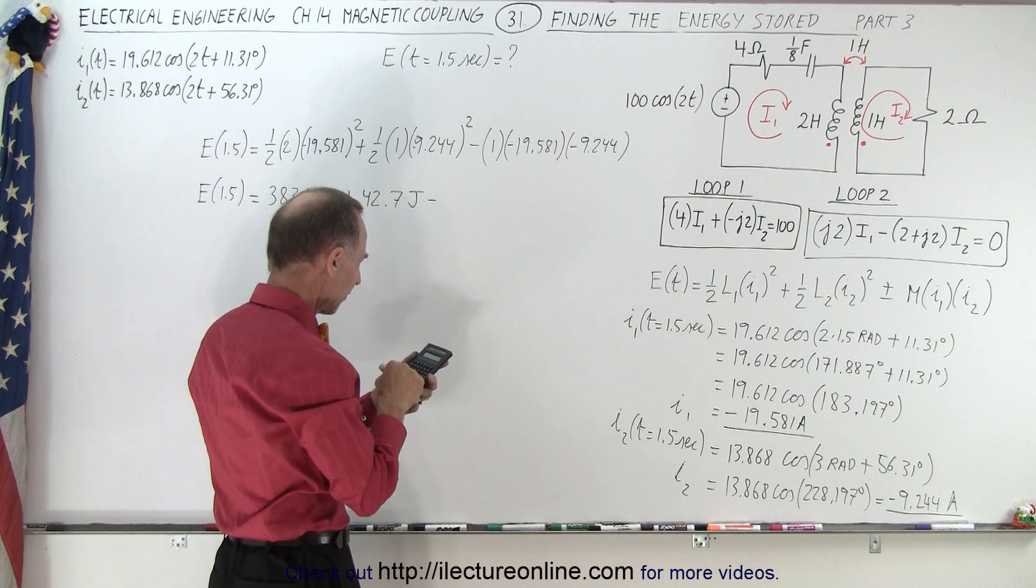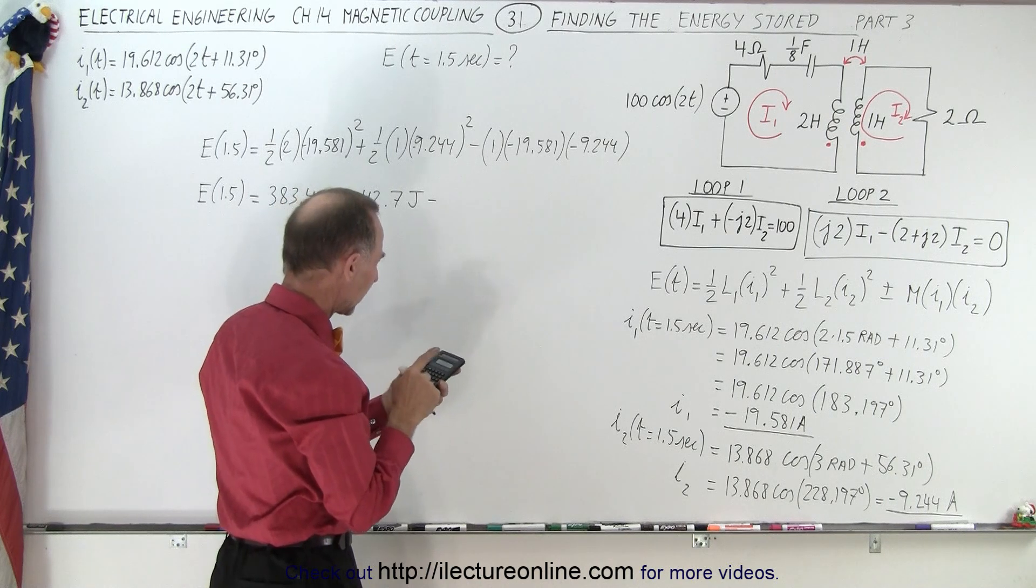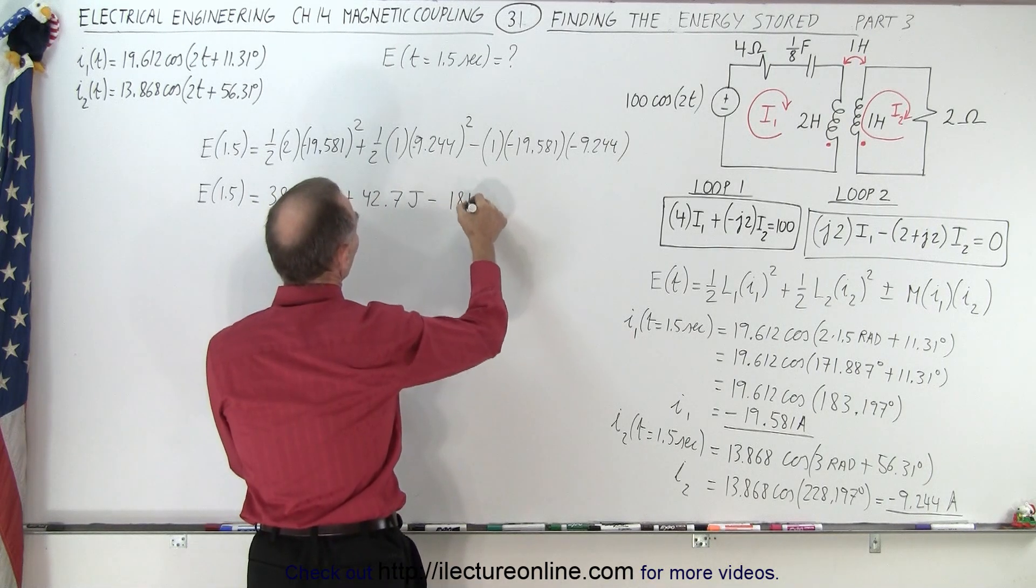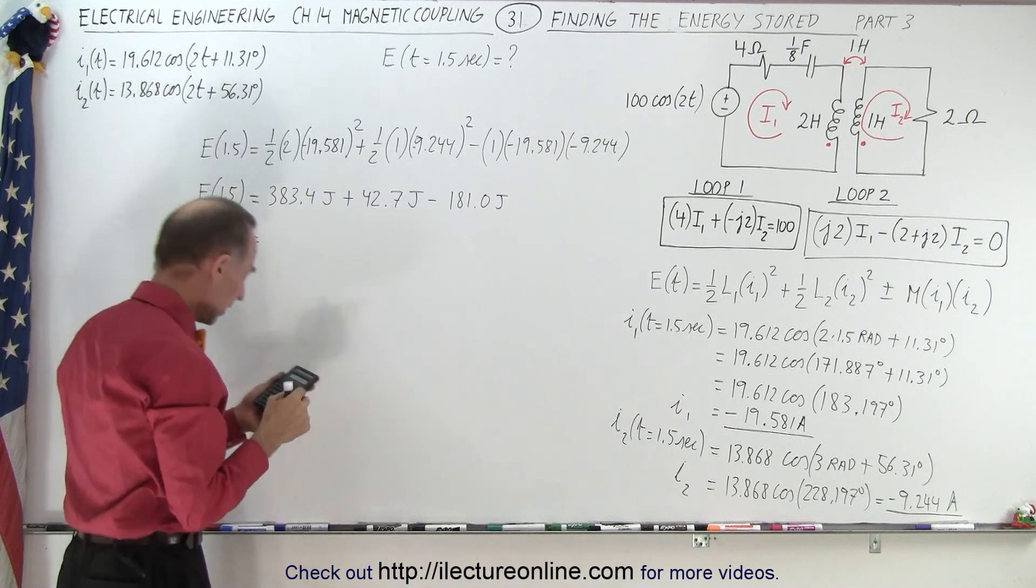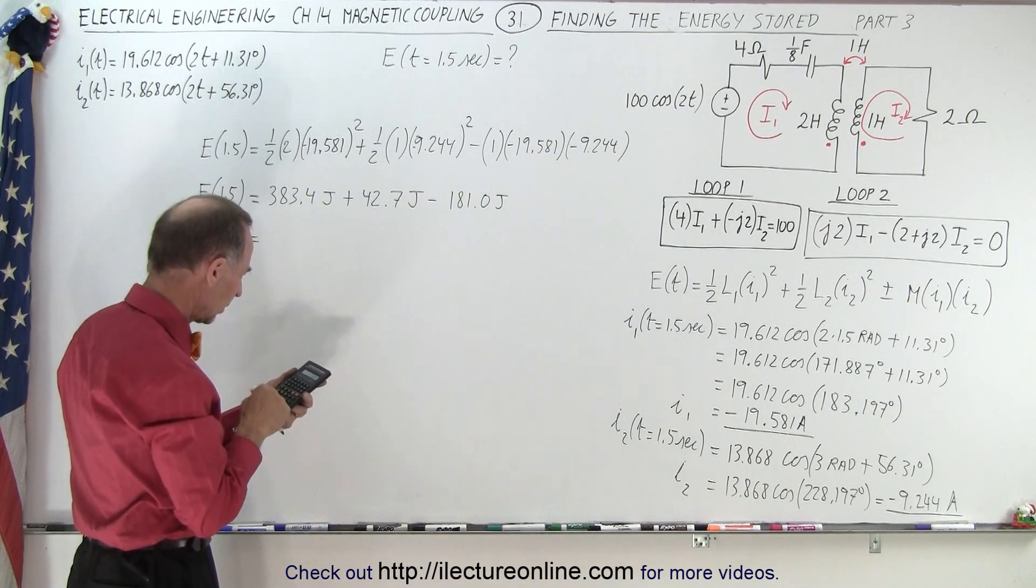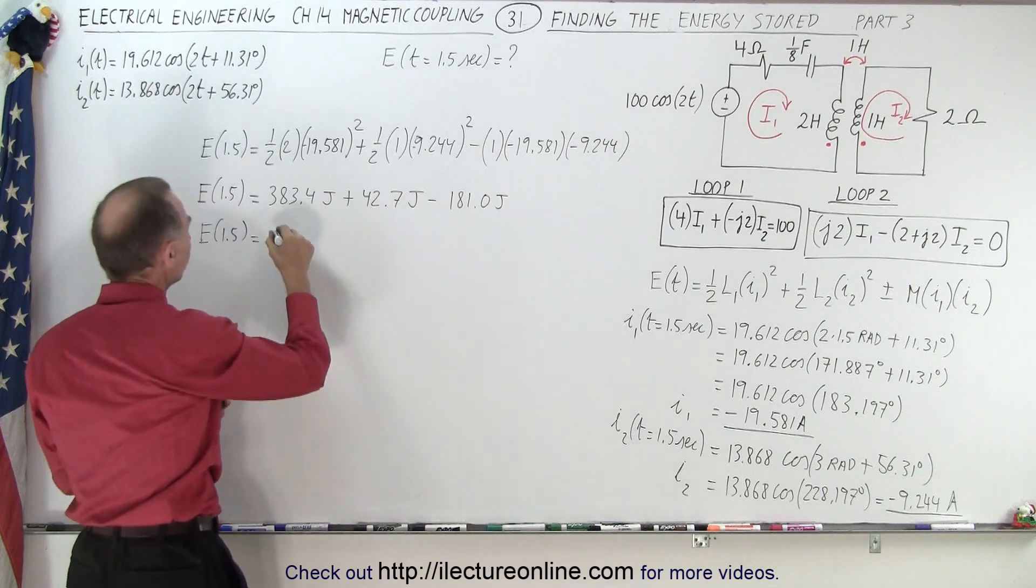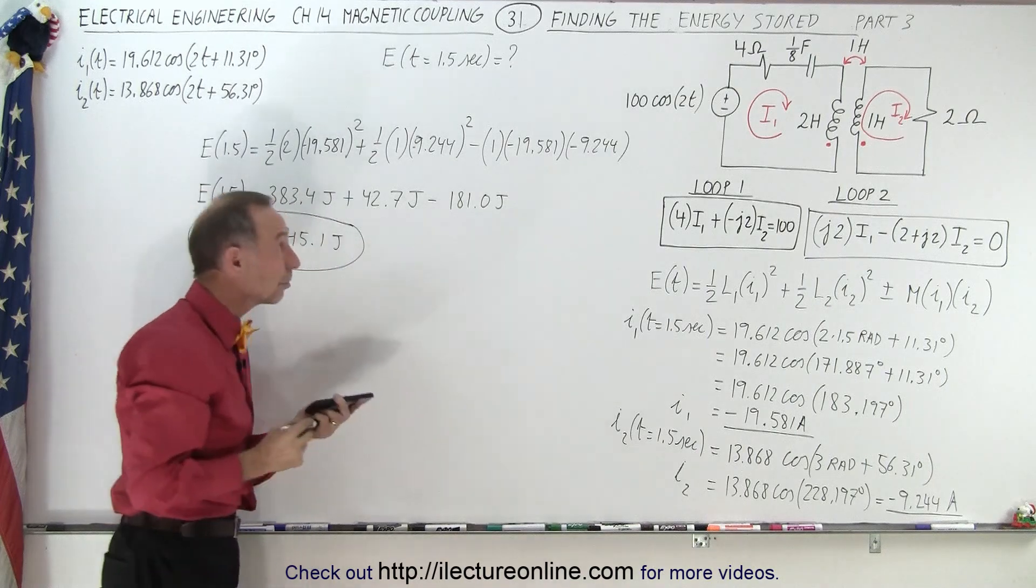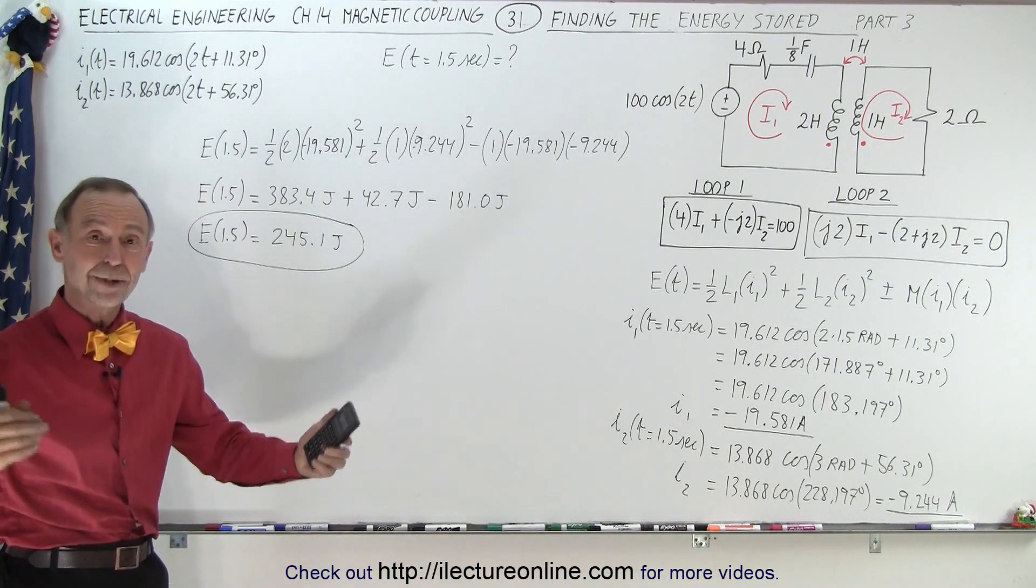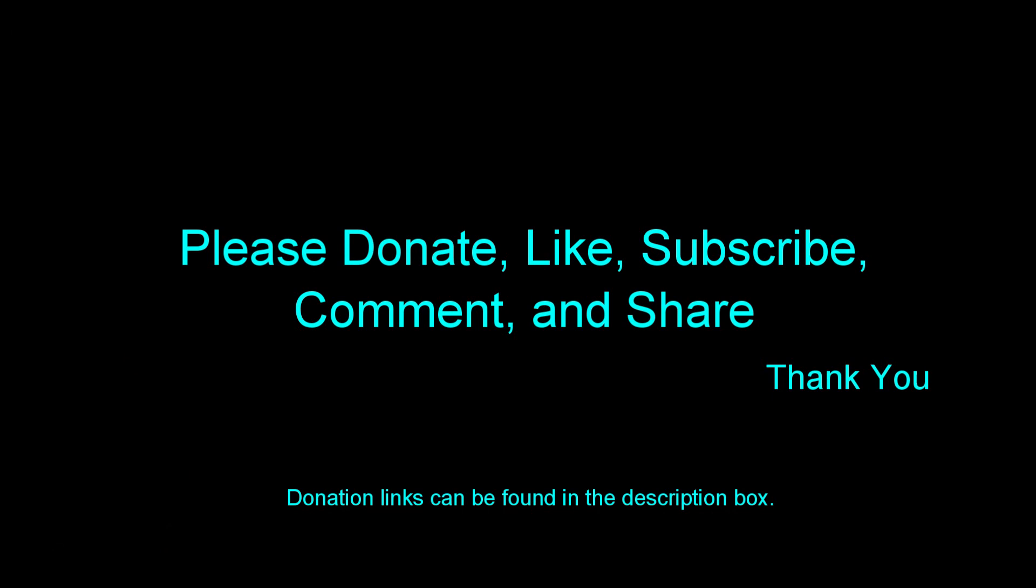And then minus 19.581 times 9.244 we get minus 181.0 joules. And so finally when we add all those up we get 383.4 plus 42.7 minus 181 and that gives me 245.1 joules, which is the total energy stored in the circuits at 1.5 seconds. And that is how it's done.